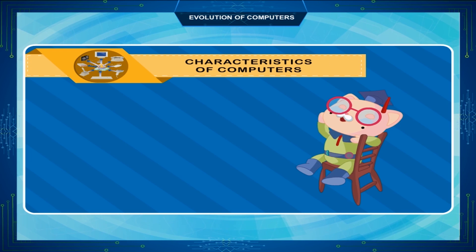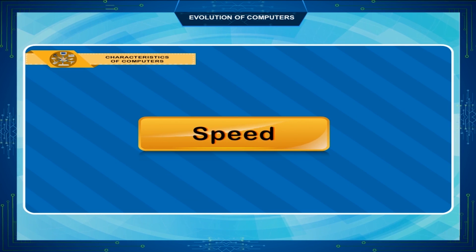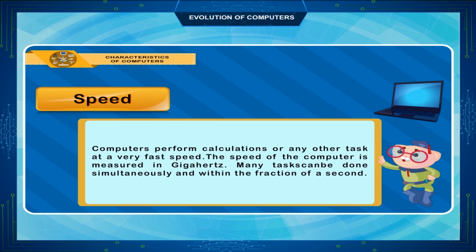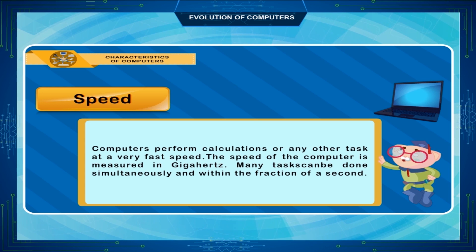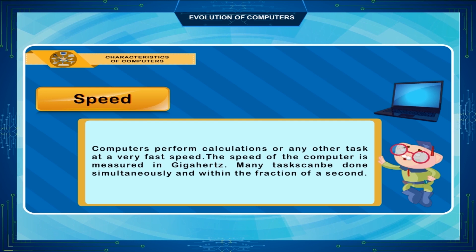Characteristics of Computers — Speed: Computers perform calculations or any other task at a very fast speed. The speed of a computer is measured in Gigahertz. Many tasks can be done simultaneously and within a fraction of a second.